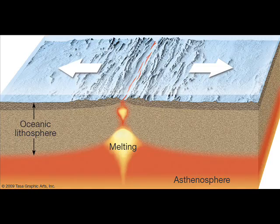Our first type of plate movement is divergent oceanic-oceanic. This is when two oceanic plates are pulling apart.